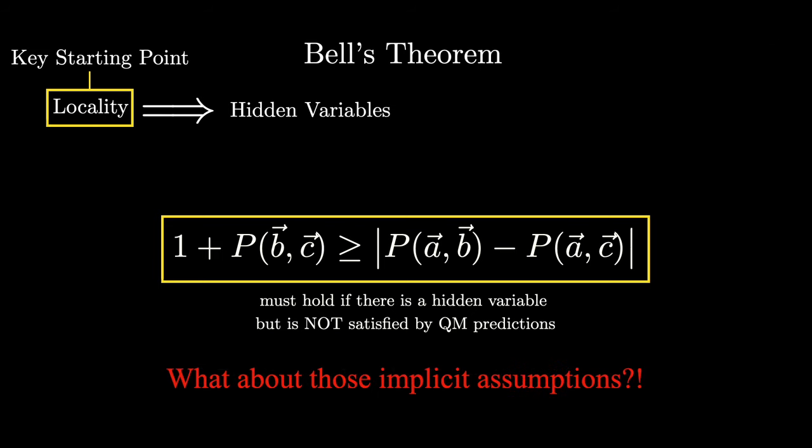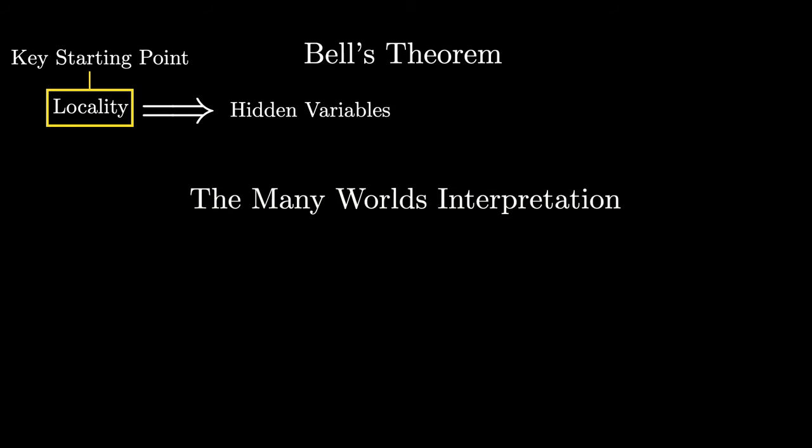Unless… there's something wrong with Bell's implicit assumptions. That's right. There are a few ways out of this conclusion if you choose to reject one of the implicit assumptions that went into Bell's argument. Though this path seems to lead to a universe that is even weirder than what non-locality entails. I'll mention just two of the most interesting ones. Many worlds and super determinism. An assumption that you might not have realized was made in this analysis was what actually happens when a measurement is taken.